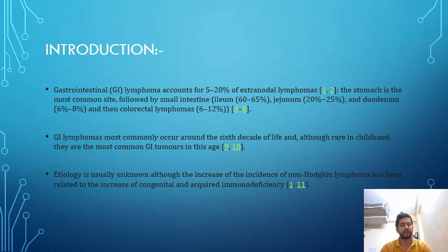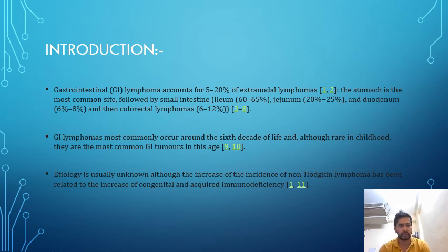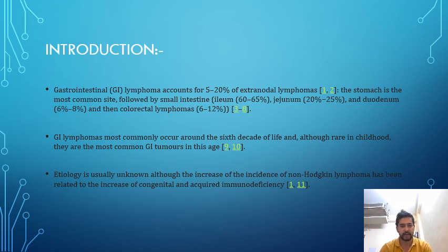Gastrointestinal lymphomas account for five to twenty percent of extra-nodal lymphomas. The stomach is the most common site, followed by small intestine, jejunum, and duodenum, and then colorectal lymphomas. They mainly occur in the sixth decade.